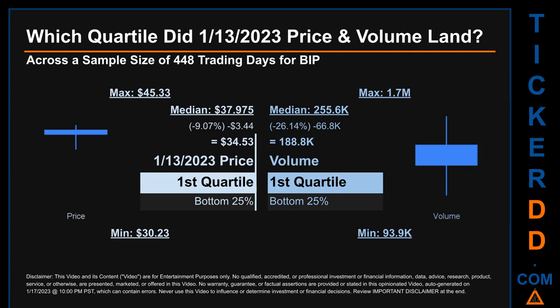The day's volume also landed within the first quartile, at the bottom 25% of all sampled daily volume, which saw a max daily volume of 1.7 million and a minimum of 93.9 thousand. Quartiles tell us about the spread of a data set by breaking that data set into quarters, just like how the median breaks the set into half.